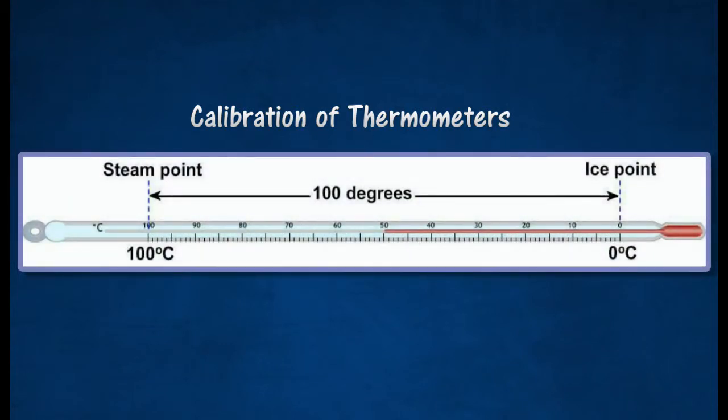Thermometers must be calibrated before they can be used to measure temperature. The calibration of an instrument refers to the process of marking up a scale on the instrument to be used as measurement.